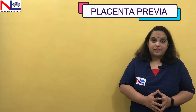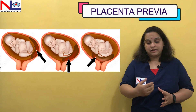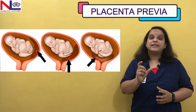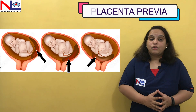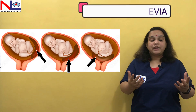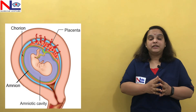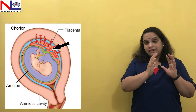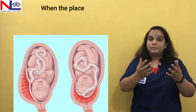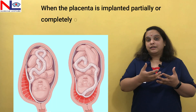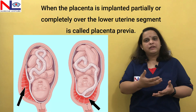Placenta previa — as the name denotes — means the placenta is coming in front. 'Previa' is a Latin word meaning 'in front' or 'before.' Normally, the placenta is the main structure that nourishes the fetus and is implanted in the upper segment. But in placenta previa, the placenta lies in the lower segment over the internal os, or near the internal os.